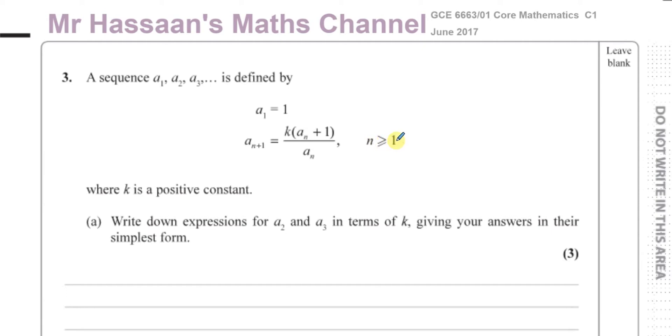It tells us that n is greater than or equal to 1 where k is a positive constant. Write down expressions for a2 and a3 in terms of k giving your answers in their simplest form. So basically this is called a recurrence relationship.